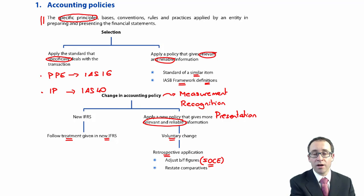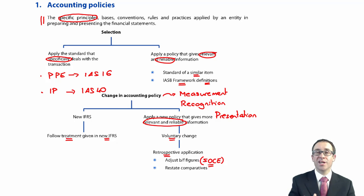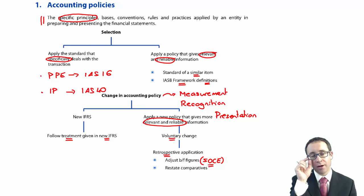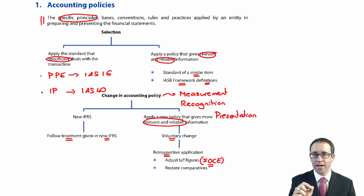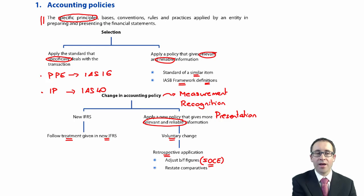Be careful: if you change depreciation from straight line to reducing balance, that is not — I repeat, not — a change in accounting policy. Your policy is to depreciate. You're just changing how you estimate that depreciation.